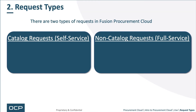There are two basic types of requests in Fusion Procurement Cloud, and really in all e-procurement applications: catalog versus non-catalog. Catalog requests are previously negotiated content items that have been cataloged, so the requester can access them by themselves — self-service. A non-catalog request is when the requester has searched through catalogs, can't find the item or service they want, and needs to order it outside of that catalog structure. This engages procurement, which is why it's called full service.